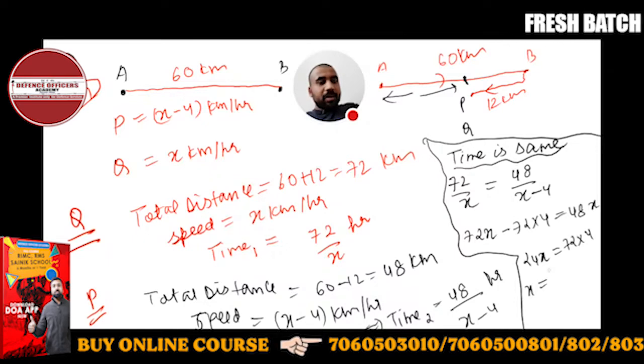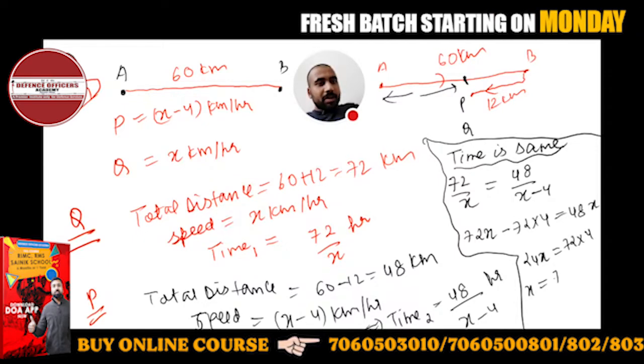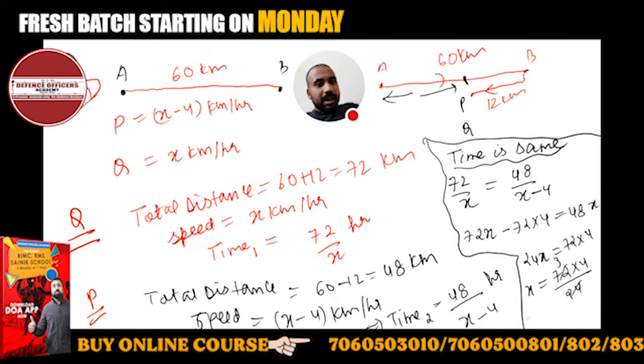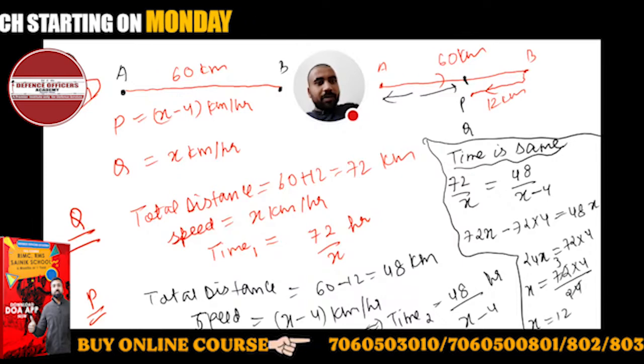24 times 3 is 72, so x will be 72 times 4 upon 24. 24 times 3, so x is 12.